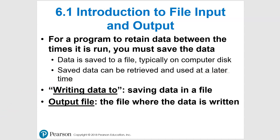So let's talk about file input and output. When we see 'writing data to' a file, that just means you're saving data in or to a file, and the output file is where the data is actually being written. Our programs so far have been executing in RAM — we're using it to store whatever kind of data we have, whether we're asking inputs from the user or whatever. Once we close that out, that data is gone. You're not going to see it again — we lose that data.